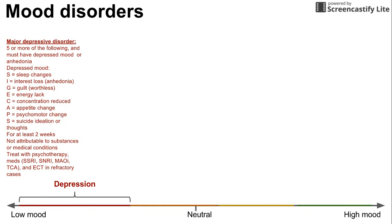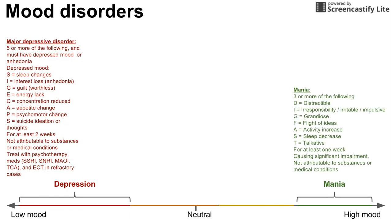Now let's go to the other side of the spectrum, where we have mania. Mania is a very high mood — somebody's talking all the time, jumping around, all over the place, sleeping a lot less. Mania requires three or more of the following DIGFAST symptoms: distractibility, irresponsibility, irritability or impulsiveness, grandiosity, flight of ideas, an increase in activity, a decrease in sleep, and talkativeness.